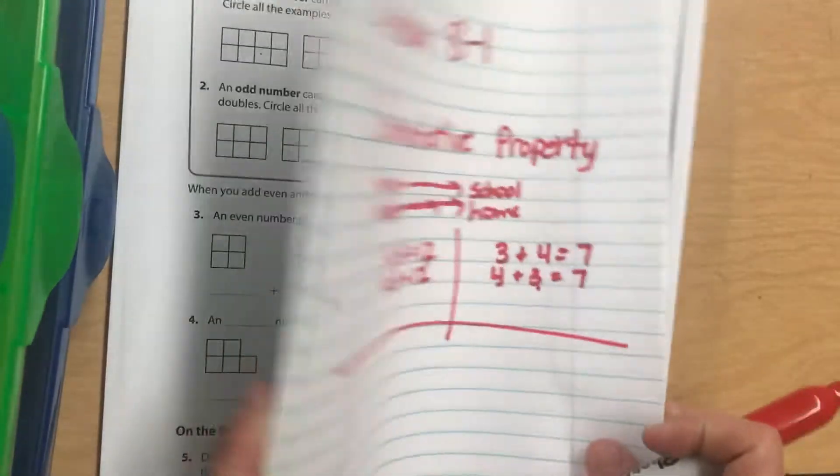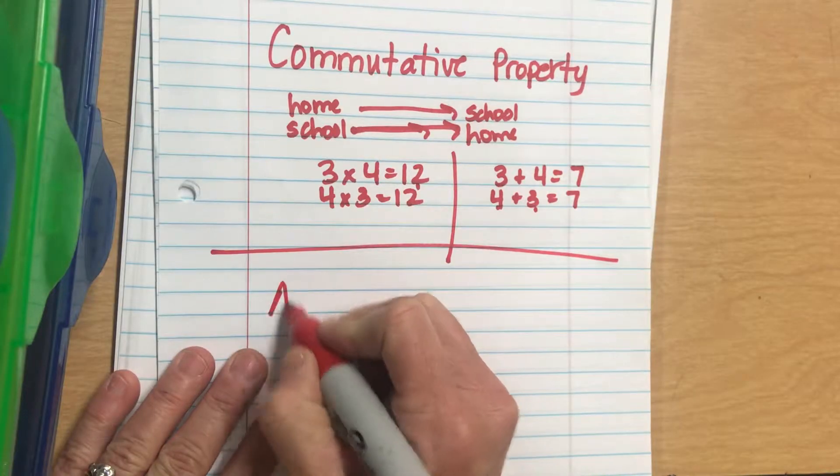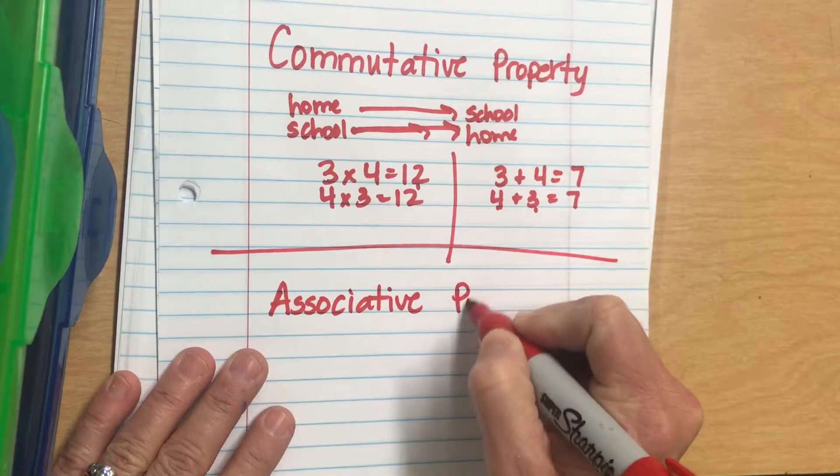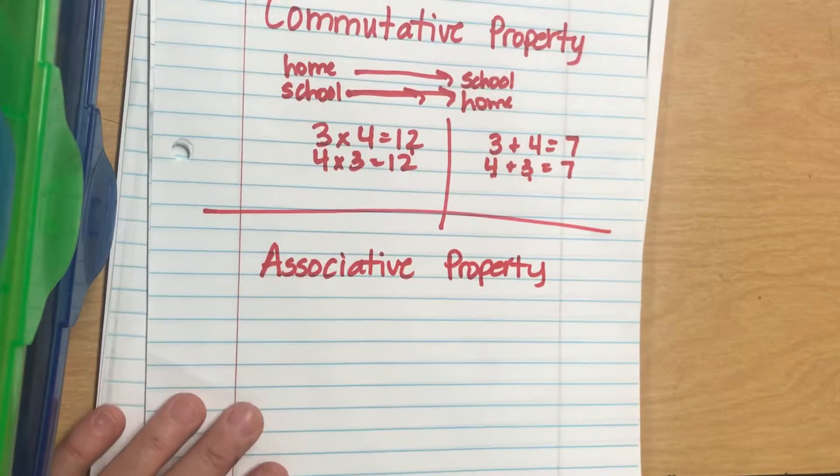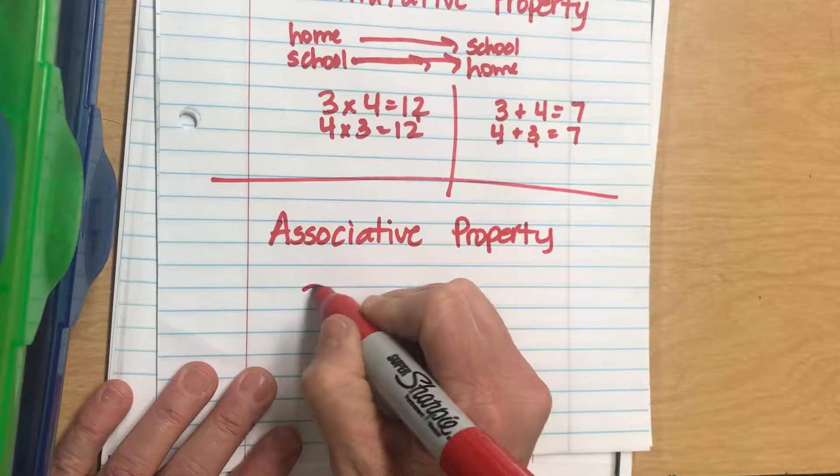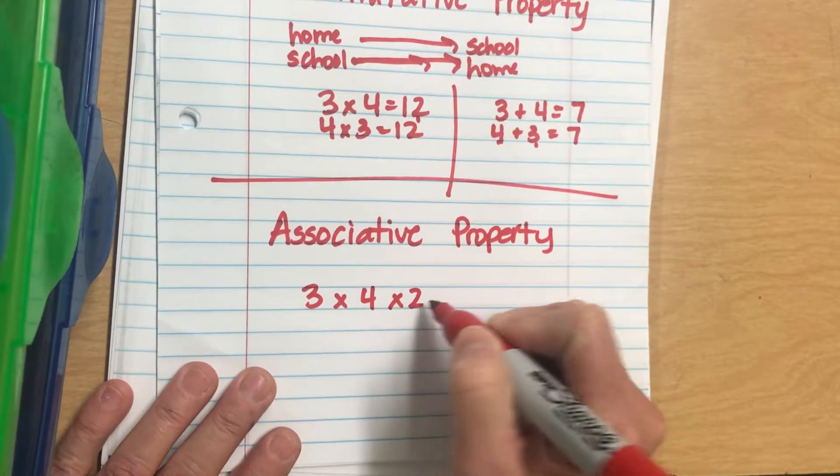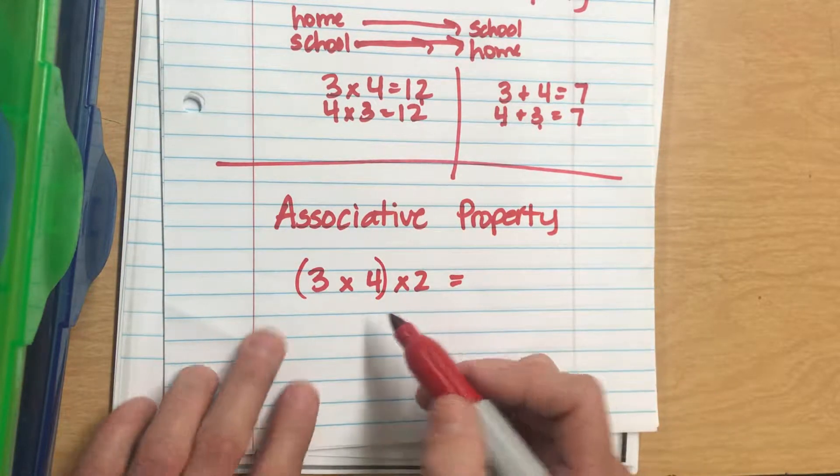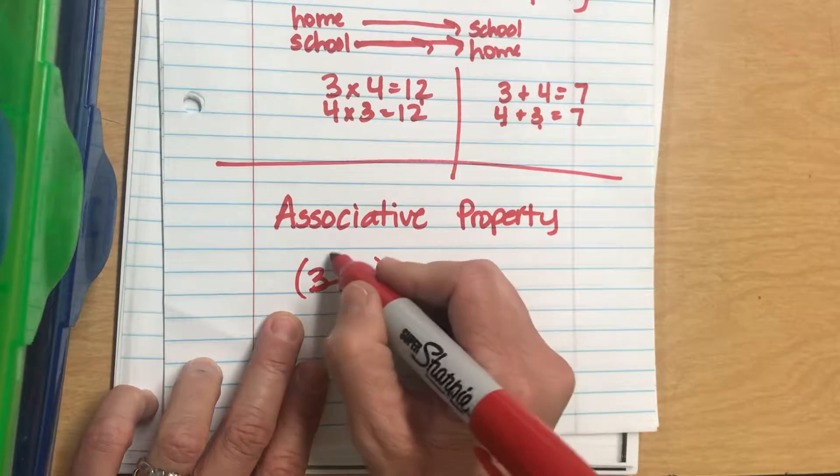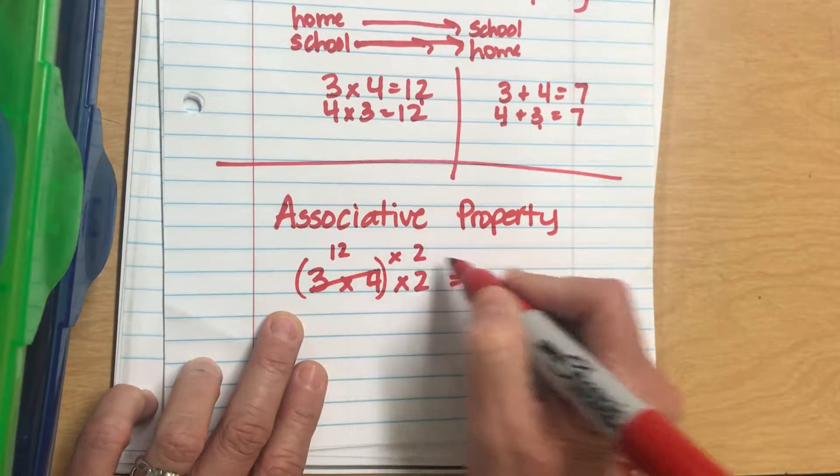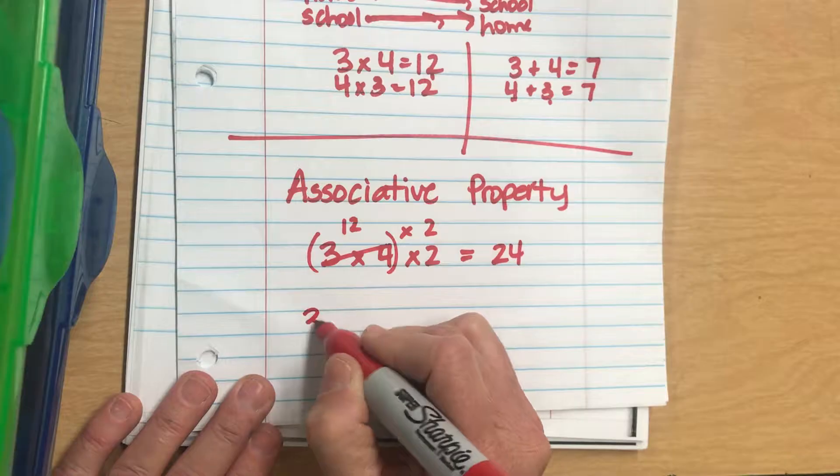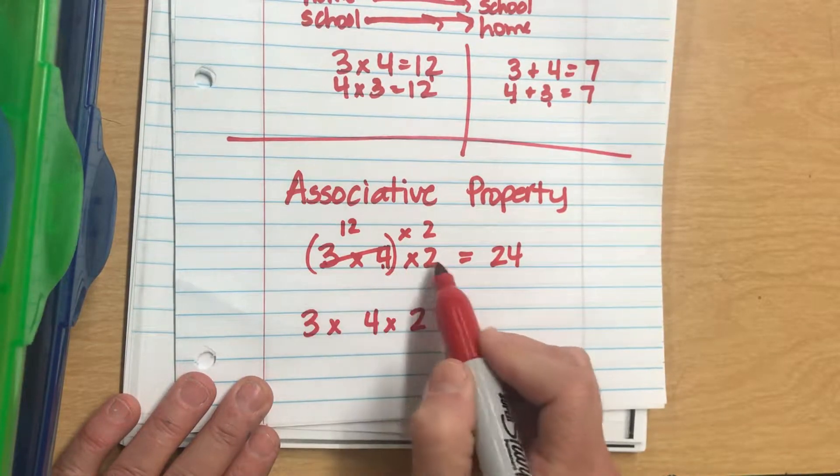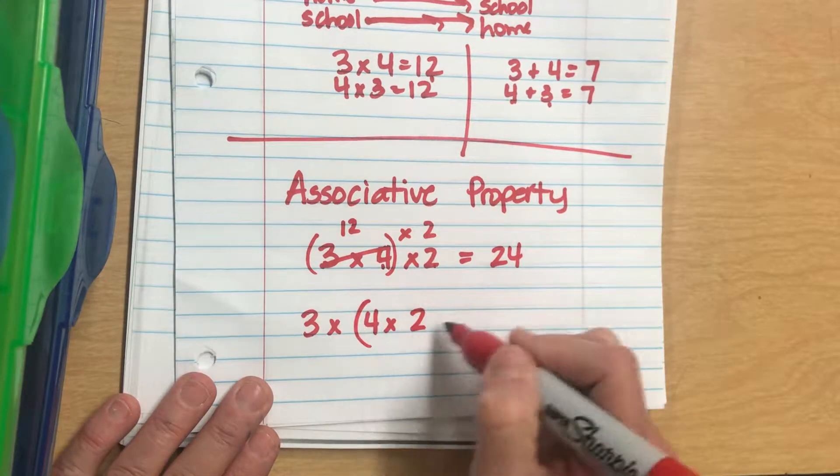We also have our associative property. Now in multiplication this meant 3 times 4 times 2. I can go 3 times 4 - remember parentheses mean I have to do what's in there first - so I can do 12 times 2 is equal to 24.